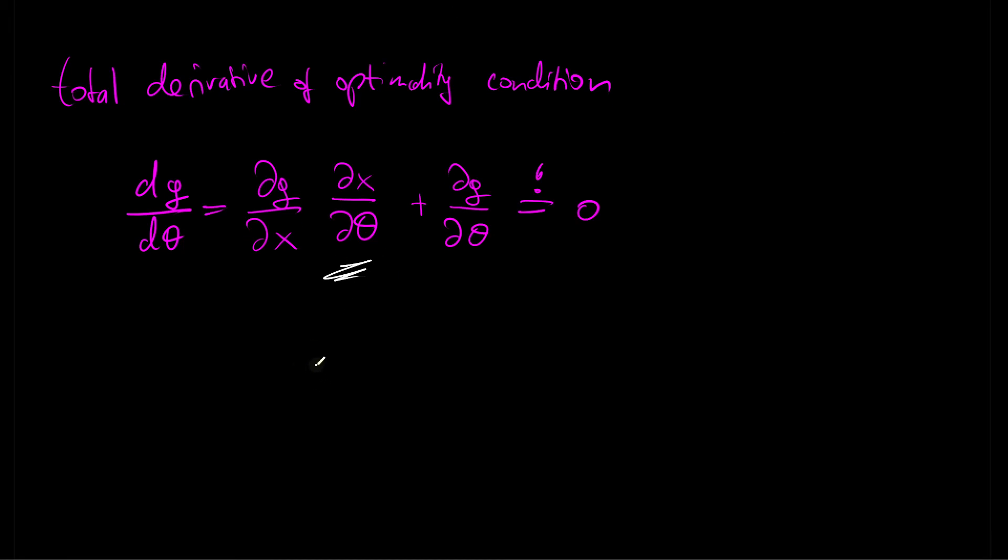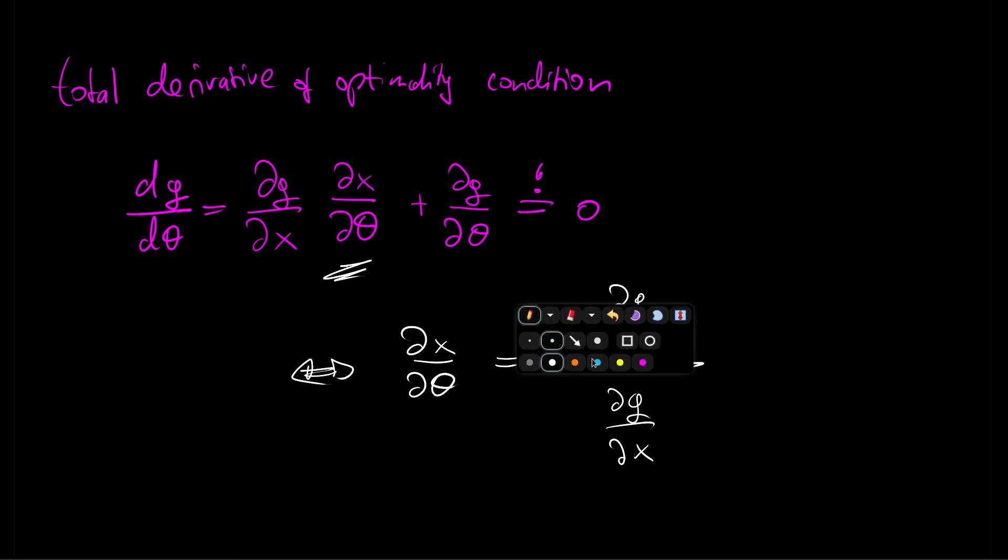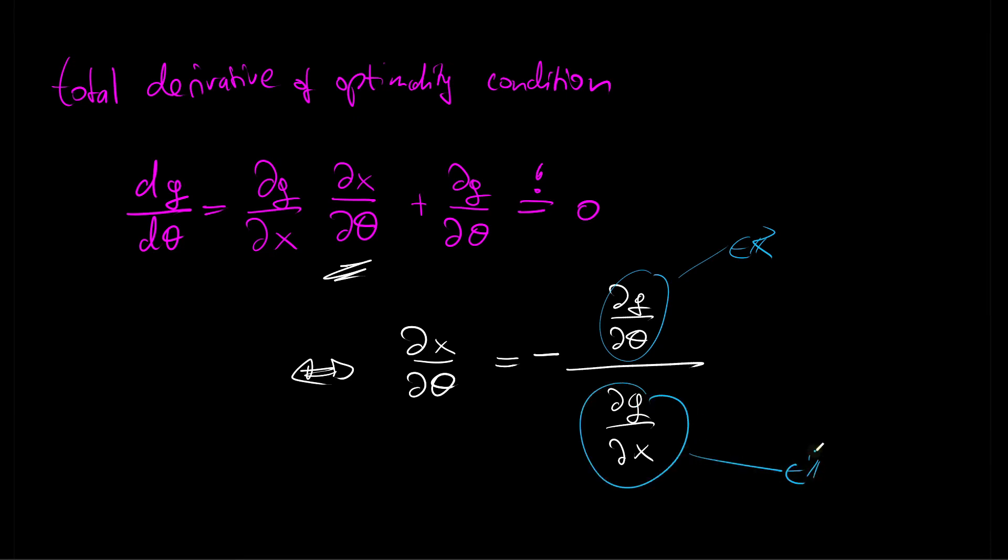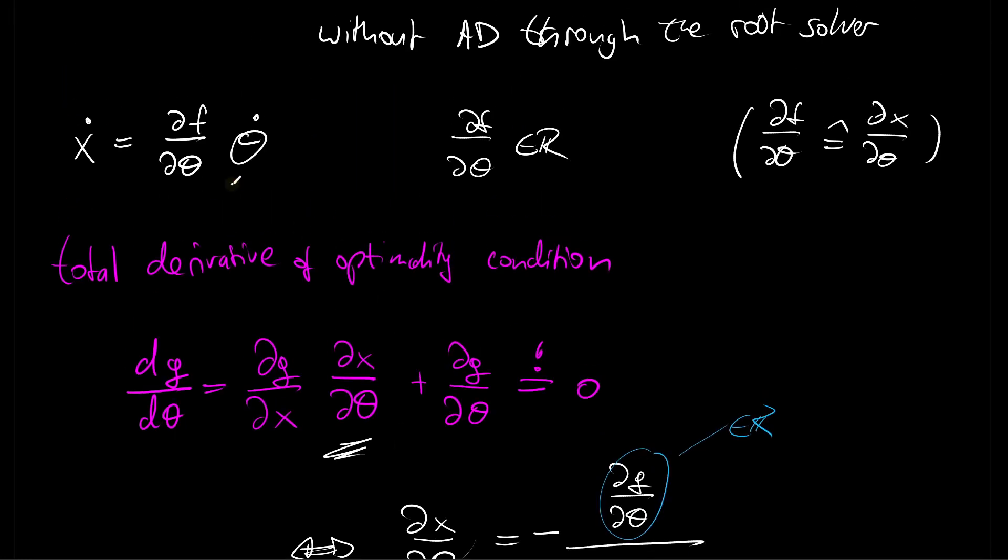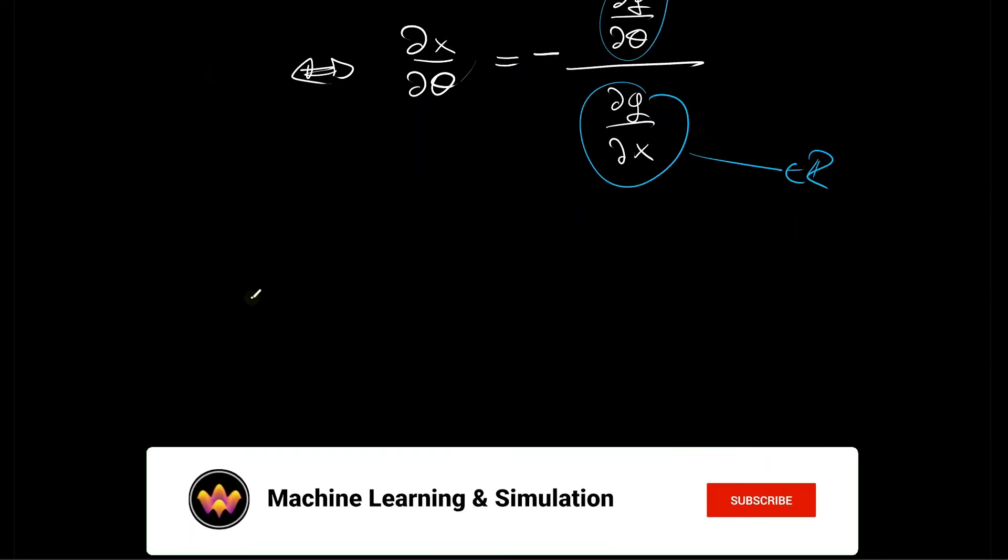If we rearrange in terms for this dx by d theta, we will get that dx by d theta is minus dg by d theta divided by dg by dx. And we of course can do that here because this is a scalar. So here we will have a scalar, and that one is also a scalar. I'm assuming, of course, it is not zero here. Well, then we can plug that back into the pushforward rule and see.